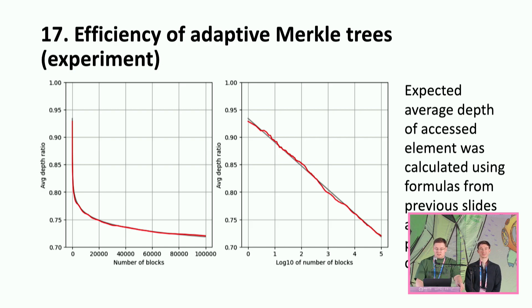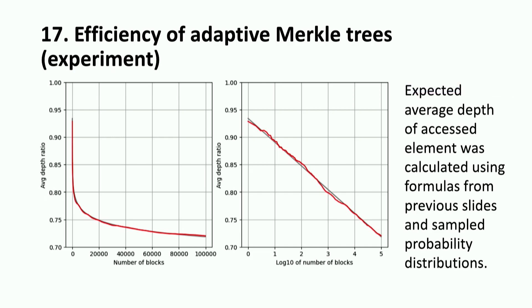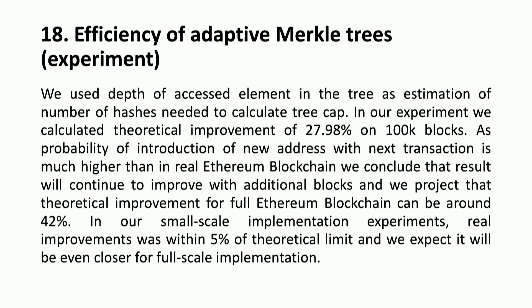The expected average depth of accessed elements was calculated using the formulas from the previous slide and the sample probability distribution, using depth of the accessed element in the tree as an estimation of the number of hashes needed to calculate the tree root. In our experiment, we calculated a theoretical improvement of 27% on 100k blocks. As the probability of transactions involving new addresses is much higher than in the real Ethereum blockchain, we conclude the result will continue to improve with additional blocks, and we project that the theoretical improvement for the full Ethereum blockchain could be around 42%. In our small-scale implementation experiments, real improvements were within 5% of the theoretical limit, and we expect it to be even closer for full-scale implementation.